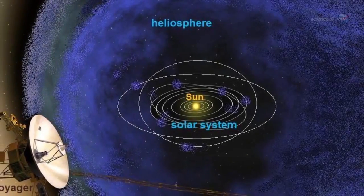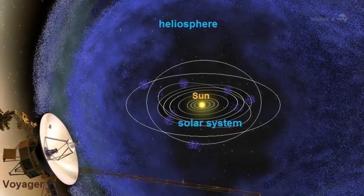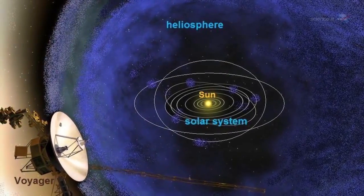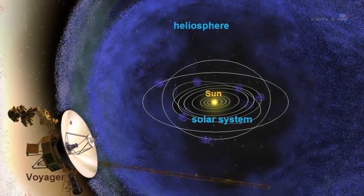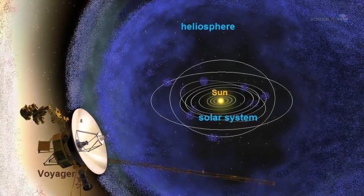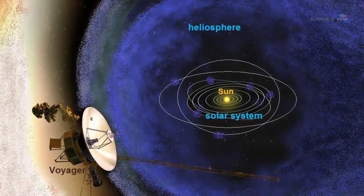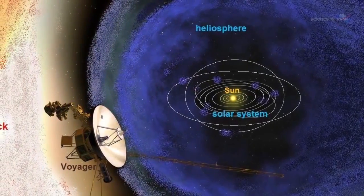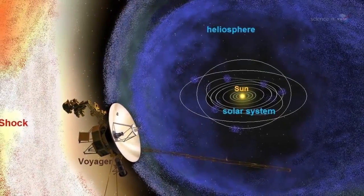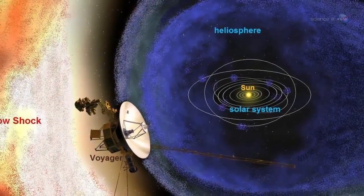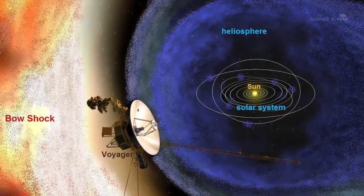A reversal of the Sun's magnetic field is, literally, a big event. The domain of the Sun's magnetic influence, also known as the heliosphere, extends billions of kilometers beyond Pluto. Changes to the field's polarity ripple all the way out to the Voyager probes, on the doorstep of interstellar space.